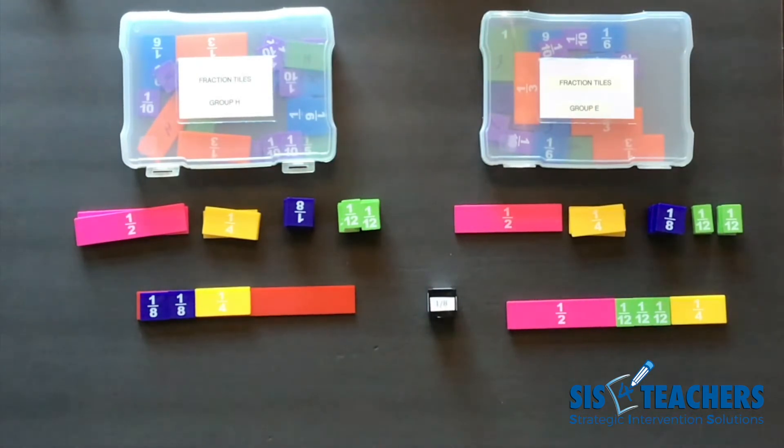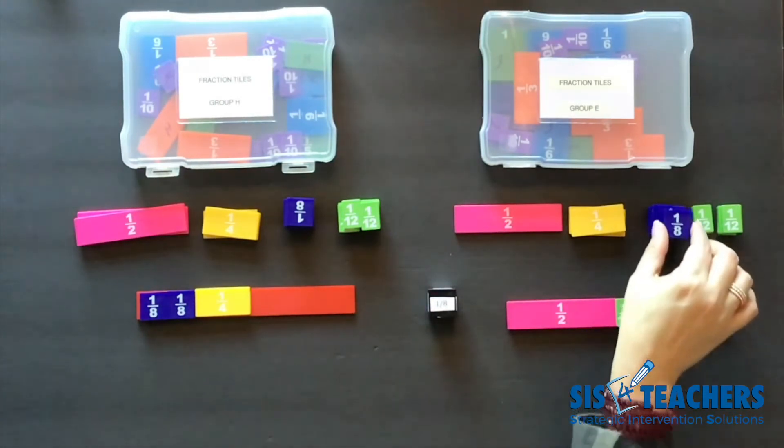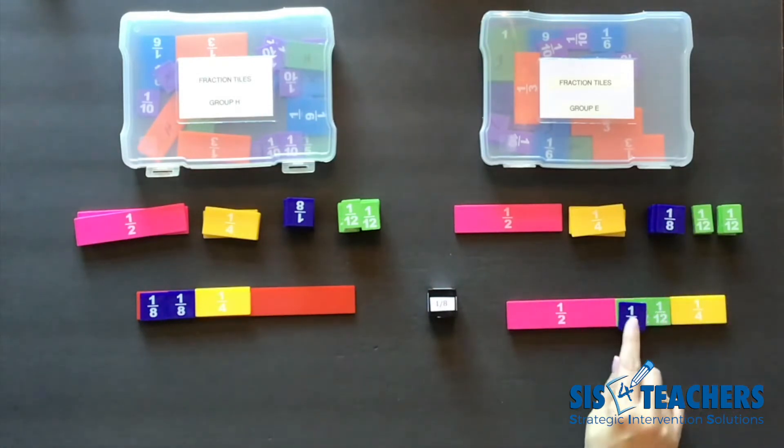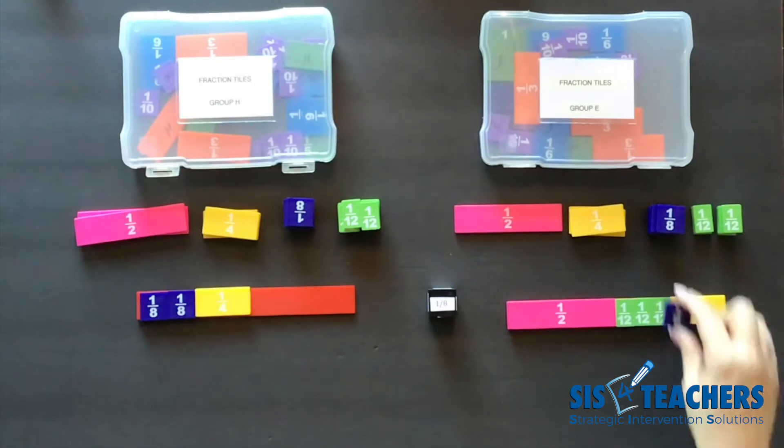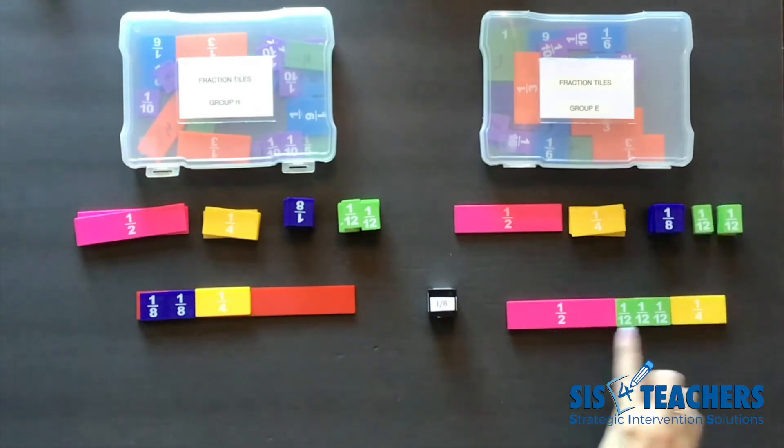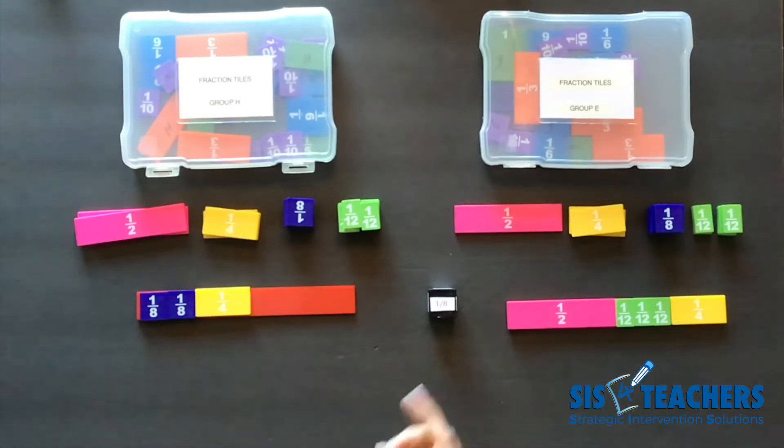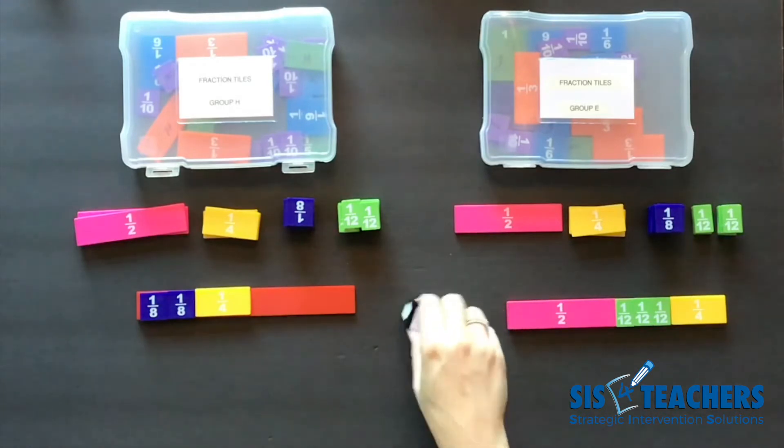She could also pull off something equivalent. So some students might not know, can they pull off something that's equivalent? Well, obviously 2/12 doesn't equal an eighth. So she could either pass or she could exchange one of her pieces for an equivalent fraction or combination. She's going to decide to pass.